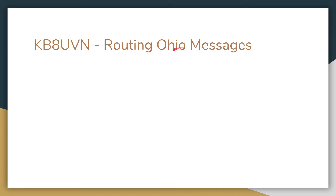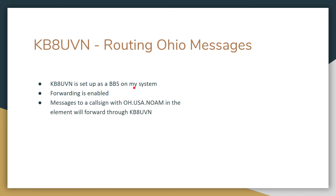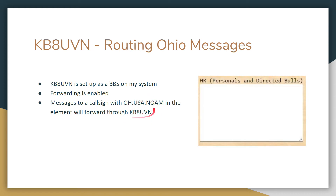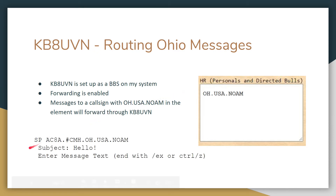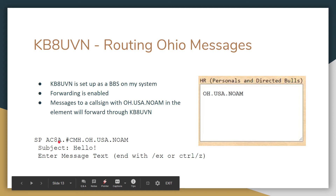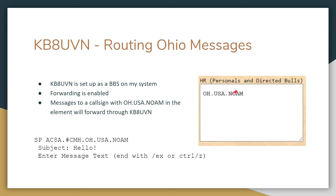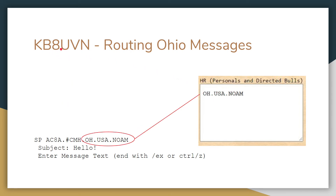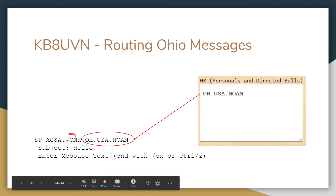In the case of KB8UVN, he's in Ohio, and I want to make sure that all messages bound for Ohio go through KB8UVN. So you set them up as a BBS, make sure forwarding is enabled, and any message that has one or all of these elements is going to be forwarded to KB8UVN. Each one of these is an element. So if a message bound for AC8A is sent, it is going to forward out through KB8UVN — because Ohio.USA.NorthAmerica is captured. It doesn't matter what's in front of it.